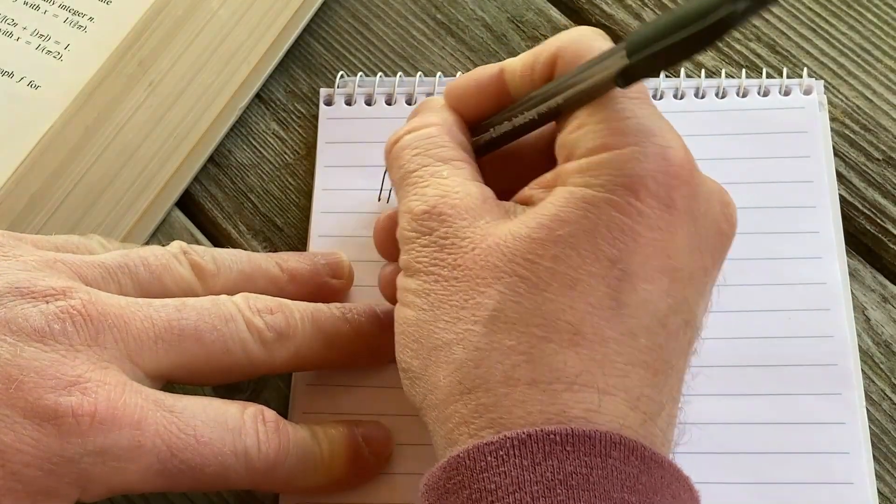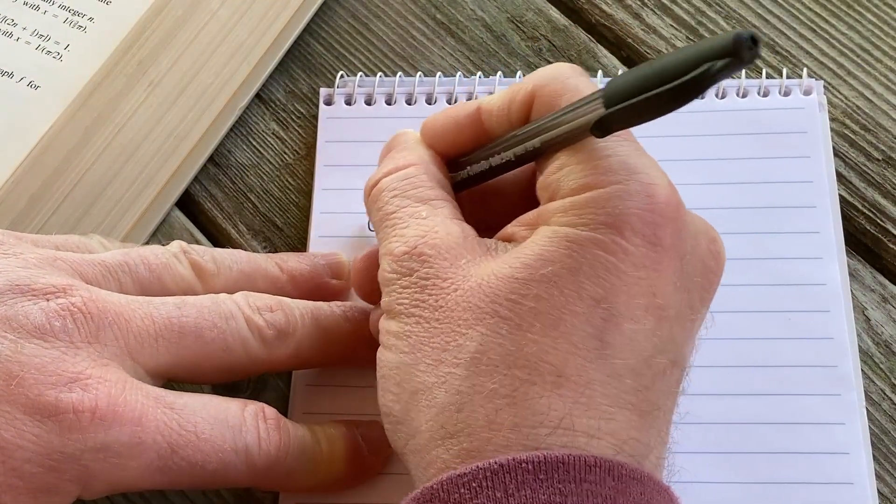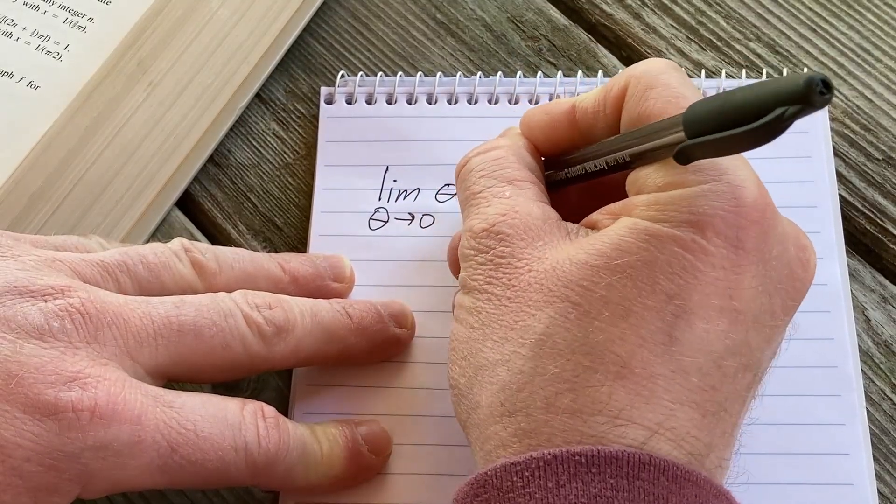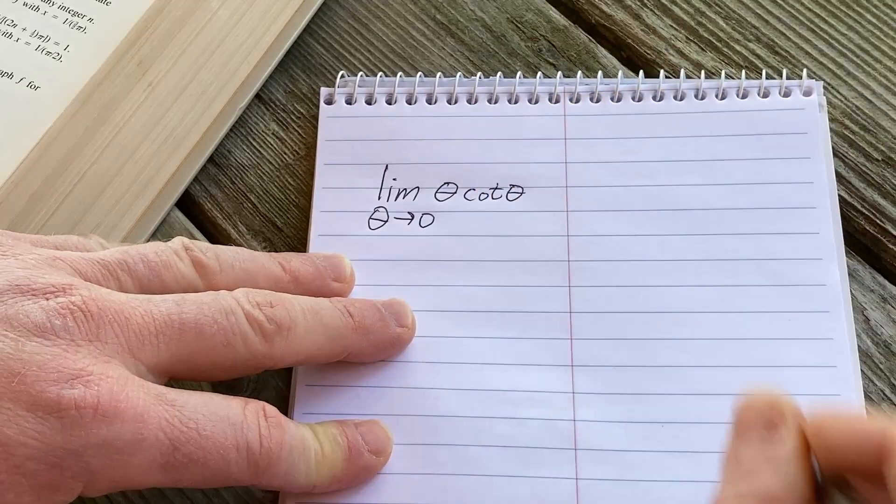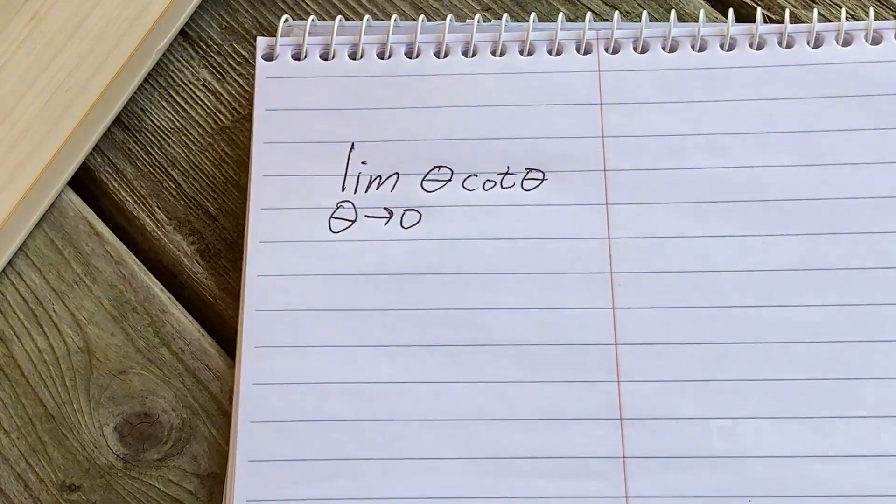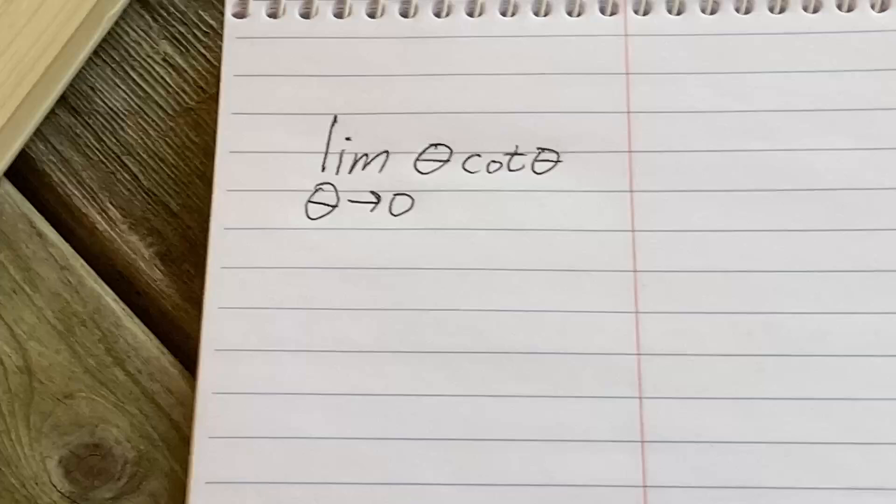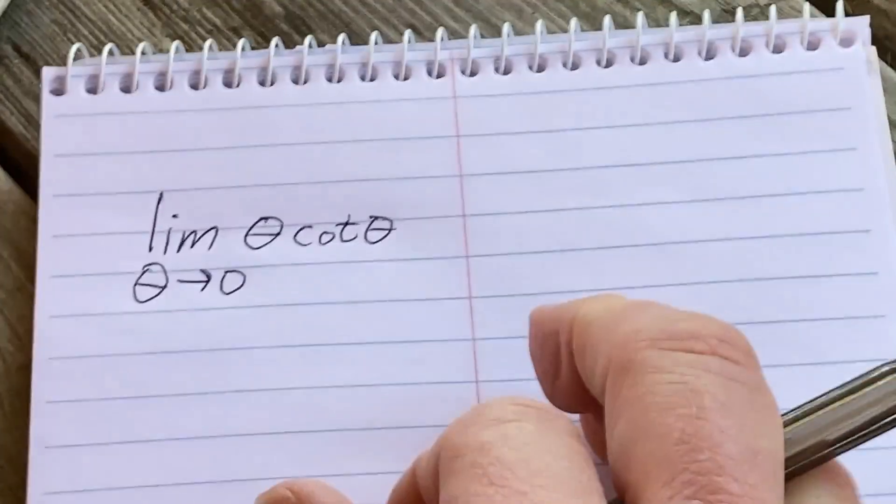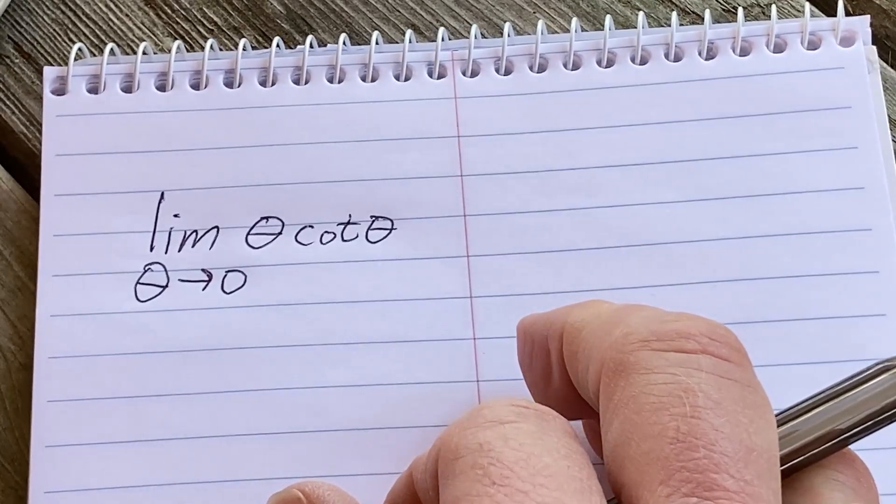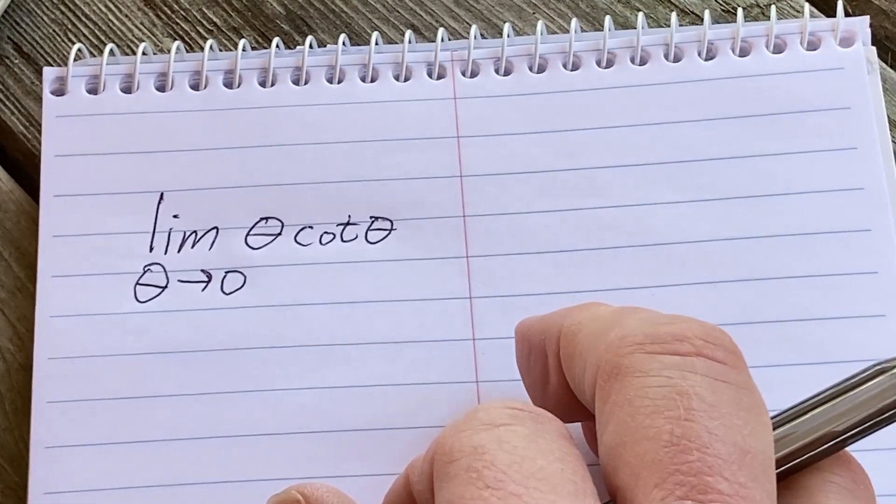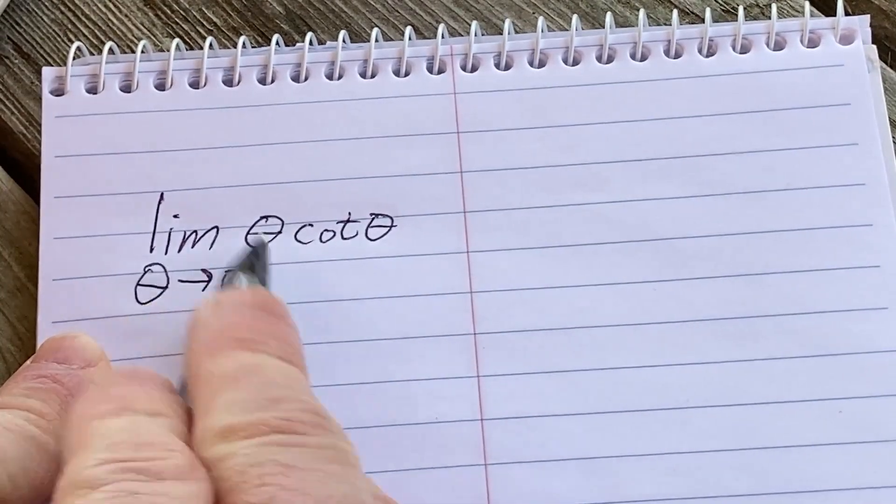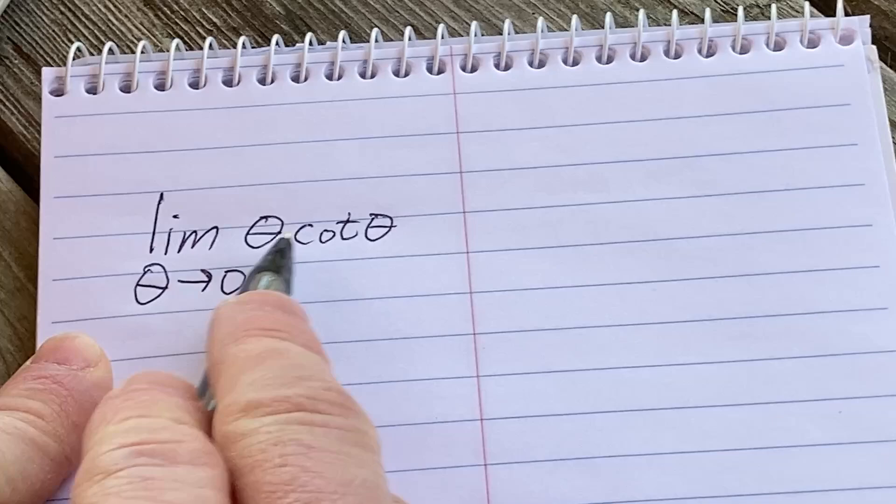So this is an exercise from the book. We have the limit as theta approaches zero of theta cotangent theta. Okay so we're going to find this limit. This is from the book again by Stein. I'll leave a link in the description to the book in case you want to check it out. Just be warned I don't know if it's still in print so there might not be that many copies but I will leave links to any that I find in the description.